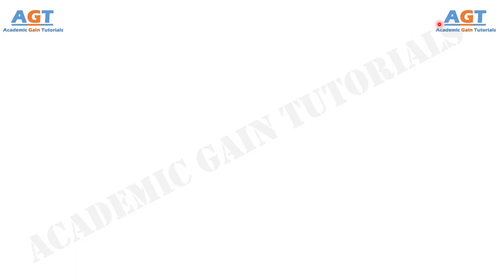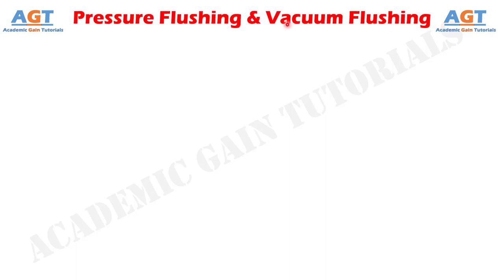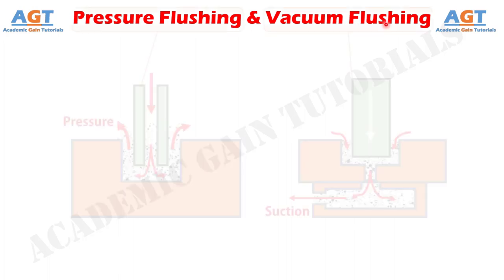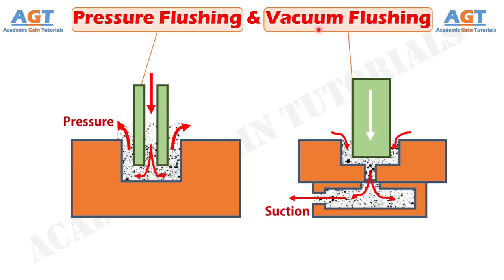Welcome to Academic Game Tutorials. In this video, we will look into the differences between pressure flushing and vacuum flushing in electro-discharge machining. Flushing is the method of supplying fresh dielectric in the inter-electrode gap and subsequently removing the existing dielectric.